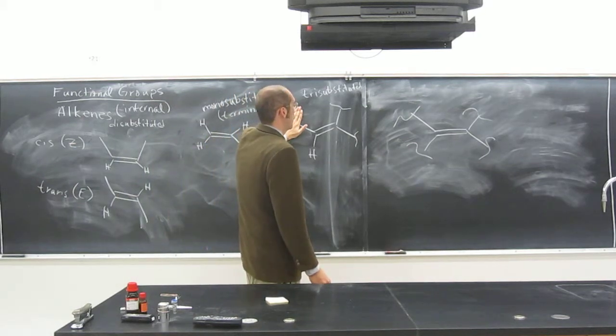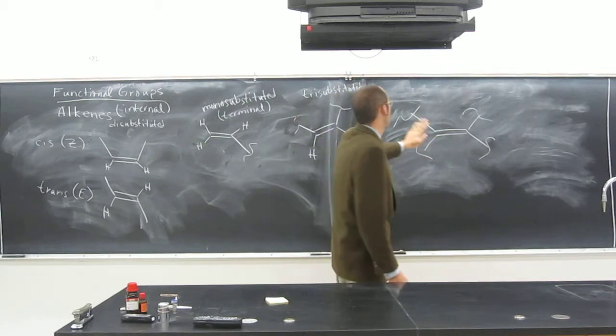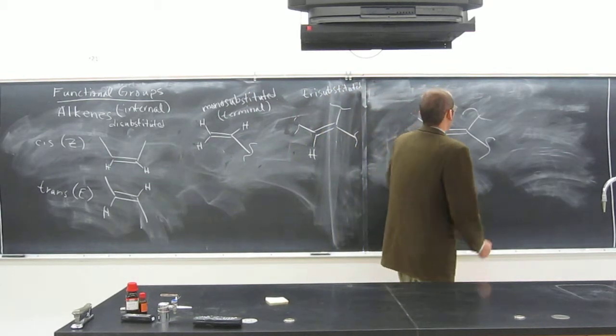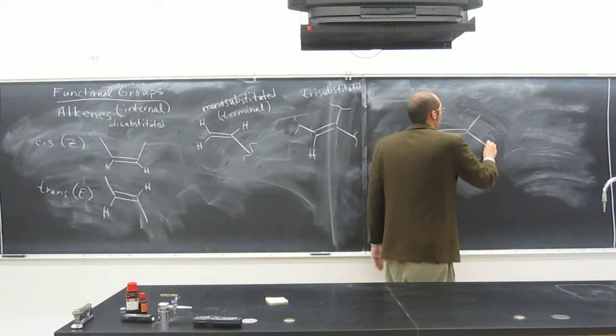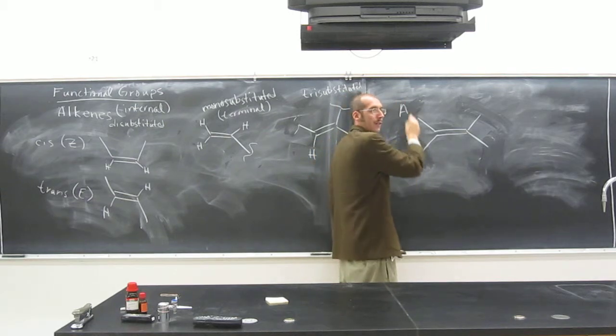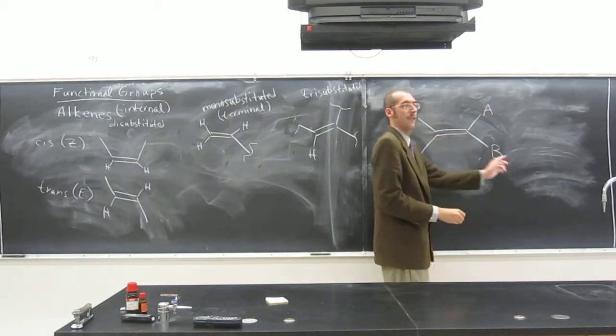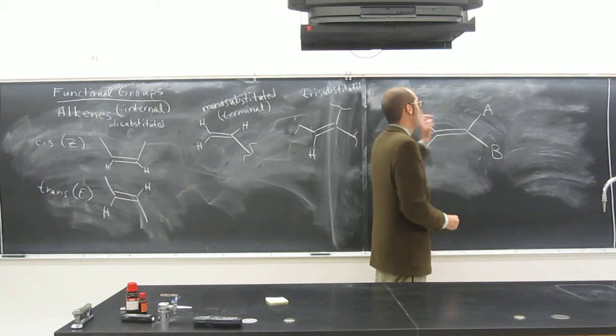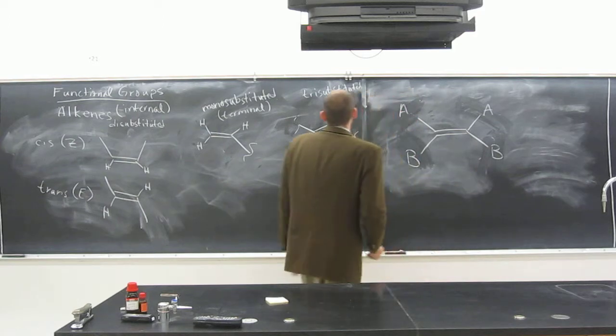With tri-substituted, with disubstituted, tri-substituted, and tetra-substituted, we can have isomers. Remember geometric isomers that we talked about last time? So if the big groups are on the same side, we'll say A is bigger than B, right? If this is a tetra-substituted, and A, that's a cis, okay? So you've got to watch that.